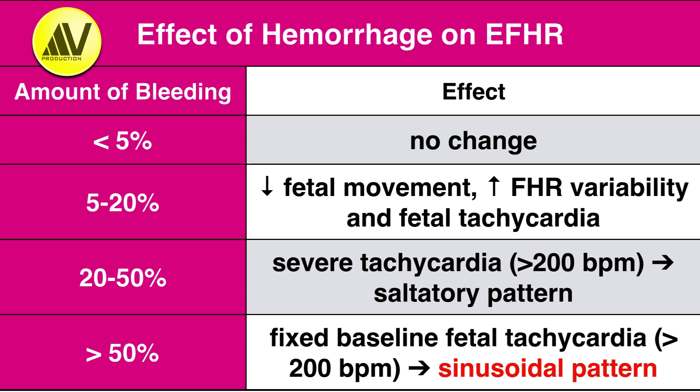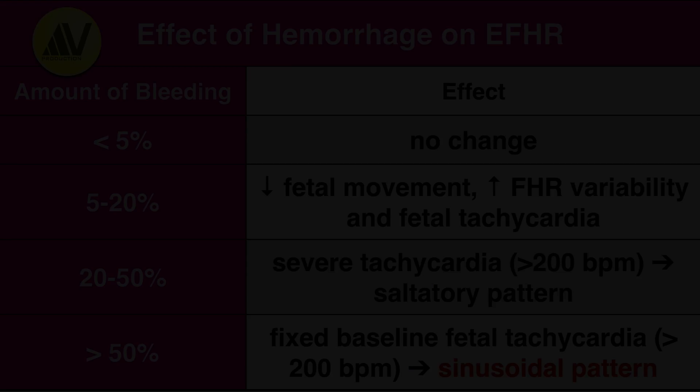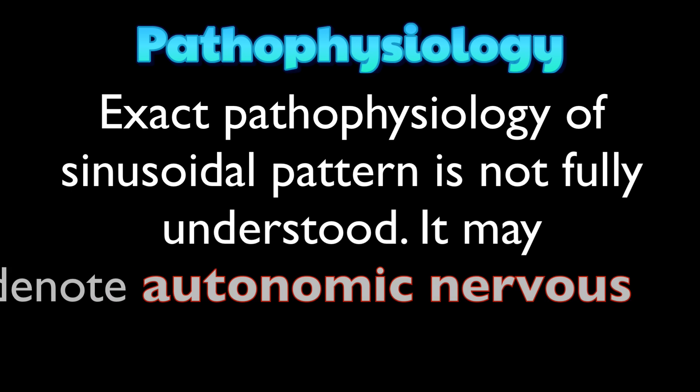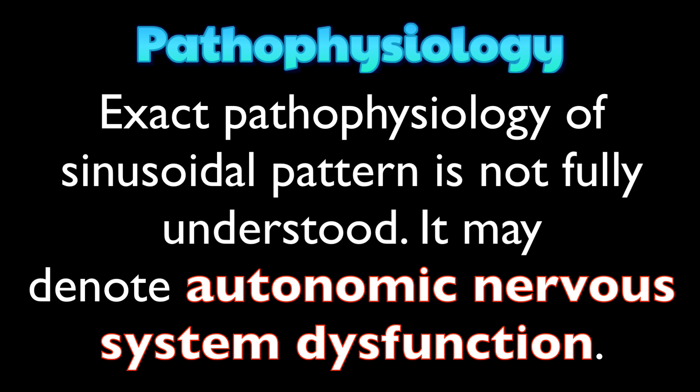However, if the fetal bleeding is severe, that is greater than 50%, this will result in fixed baseline fetal tachycardia greater than 200 beats per minute owing to vasoconstriction. Short term and long term variability are lost. This is what we call a sinusoidal fetal heart rate pattern. The exact pathophysiology of sinusoidal pattern is not fully understood. It may denote autonomic nervous system dysfunction.